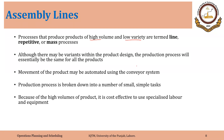The movement of the product may be automated using a conveyor system — that is very common in assembly lines. The production process is broken down into a number of small, simple tasks, which leads to job specialization: workers are specialized in performing specific narrow tasks. We are focusing more on economies of scale — producing more in less time. Because of the high volume, it is cost-effective to use specialized labor and equipment — both equipment and labor are special purpose.